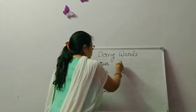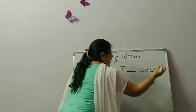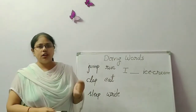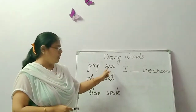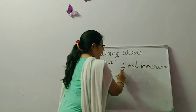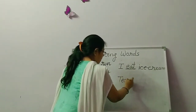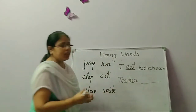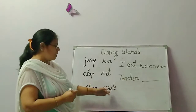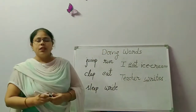I will give you one example. I blank ice cream. Now children, tell me — what action do you do with ice cream? Jump? No. Run? No. Eat? Yes! So we can fill 'eat' here. I eat ice cream. Second example: Teacher blank. Teacher kya kar rahi hai? Any action you can write here — teacher teaches or teacher writes. So we can use doing words in a sentence like this.